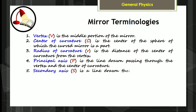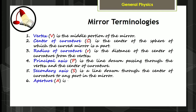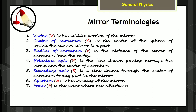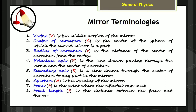Five: Secondary axis S is a line drawn through the center of curvature to any part in the mirror. Six: Aperture A is the opening of the mirror. Seven: Focus F is the point where the reflected rays meet. Eight: Focal length f is the distance between the focus and the vertex.